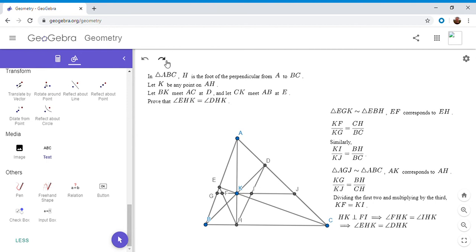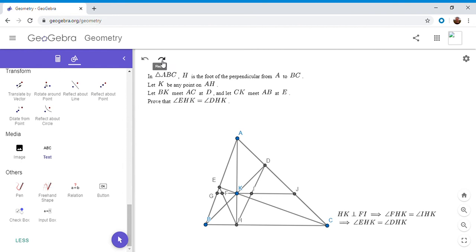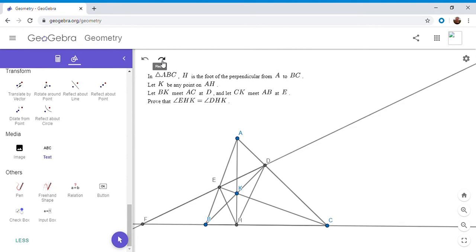Alright, so now I'm going to give a proof using projective geometry that really just makes this problem seem very easy. But you have to know the projective geometry. So I'm going to start by letting DE meet BC at a point F. So that's why I drew the figure so far to the right so that I'd have room for point F here.